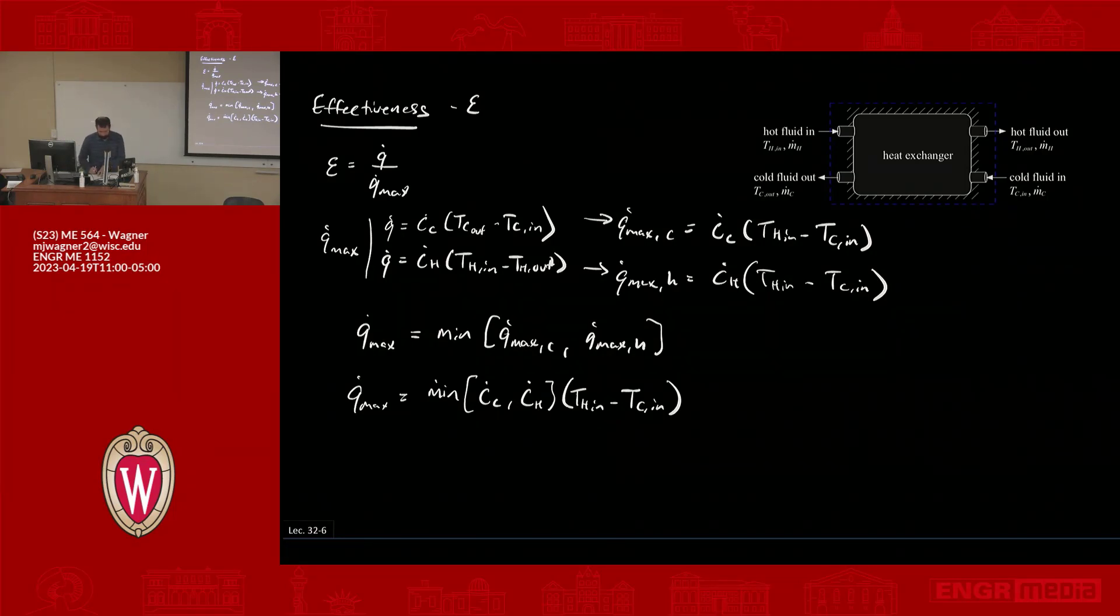OK, so that gives us the maximum. Now, our effectiveness would just be effectiveness is equal to Q dot, our actual Q dot, divided by, we'll call this now C dot min. So this is C dot min times T H in minus T C in.